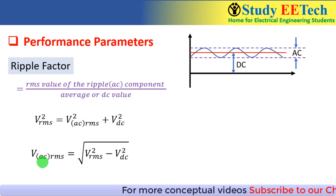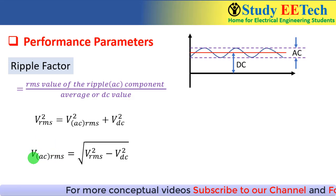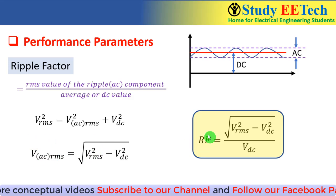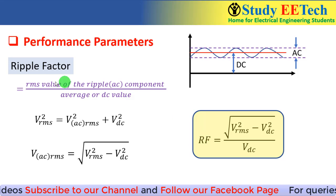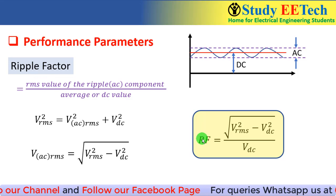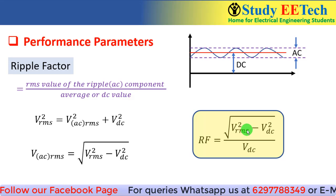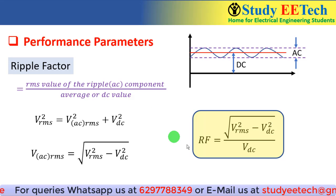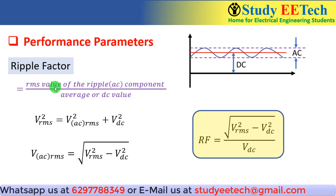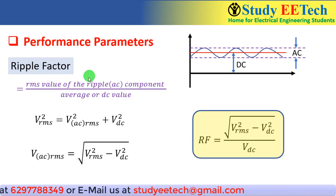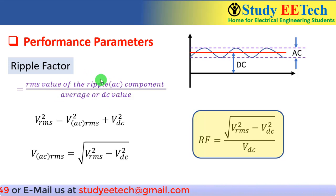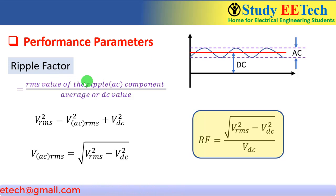From that we calculate the RMS value of the AC or ripple component as √(V_RMS² − V_DC²). From the definition of ripple factor we can write: ripple factor = √(V_RMS² − V_DC²) / V_DC. Always remember that the numerator is the RMS value of the ripple component, not the RMS value of the whole waveform.